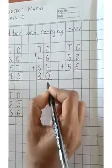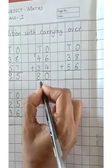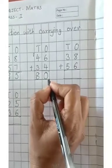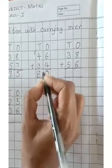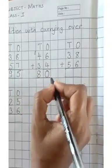So your answer is 8 tens and 0 ones. So it gives you 80. 46 plus 34 gives you 80.